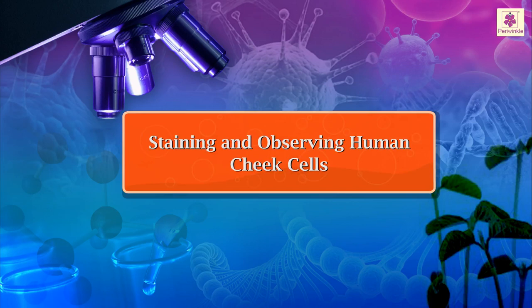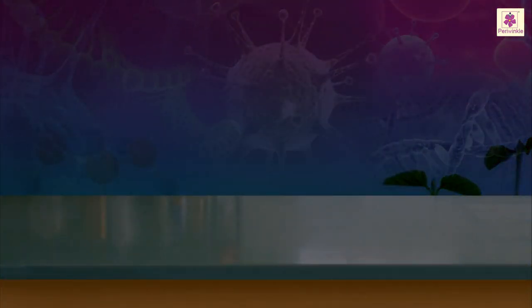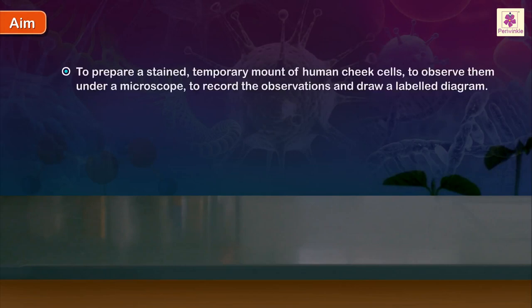Staining and Observing Human Cheek Cells. Aim: To prepare a stained temporary mount of human cheek cells to observe them under a microscope, to record the observations and draw a labeled diagram.